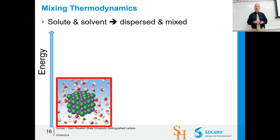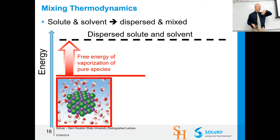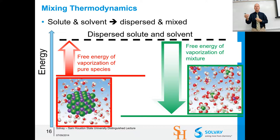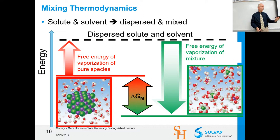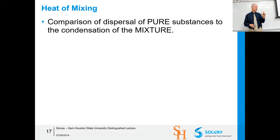The energy to disperse water is the ΔH of vaporization of water; dispersing NaCl involves the enthalpy of the crystal. The free energy of vaporization of the pure species gets us to the dispersed state, then we get some energy back by mixing — condensing into the mixture. For NaCl in water, the dispersed chlorine and sodium ions can associate with water molecules, it's lower energy, so ΔG of mixing is negative and mixing is spontaneous.